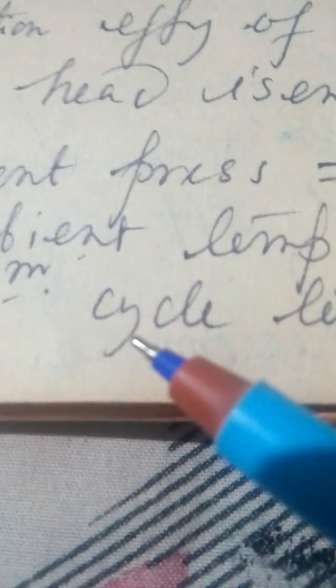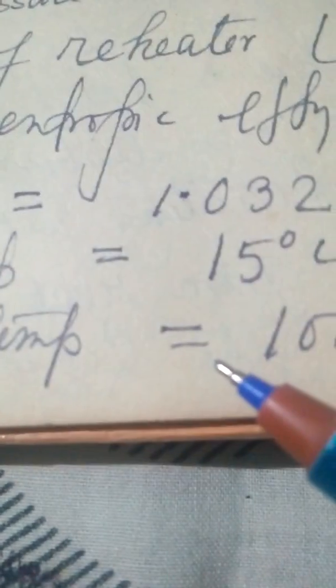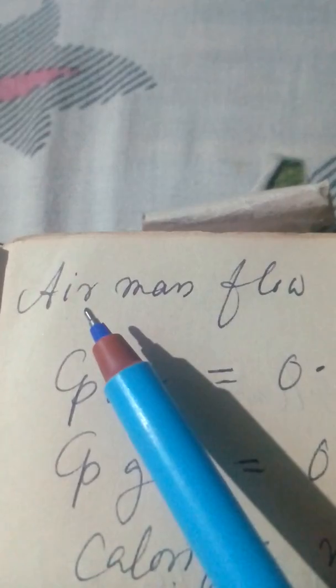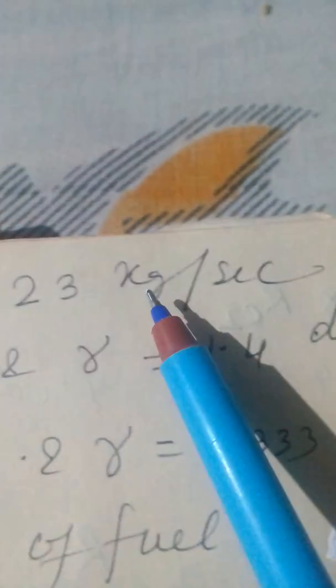Now, ambient temperature 288 Kelvin. So maximum temperature is equal to 1000 Kelvin. And then air mass flow rate, 23 kg per second.